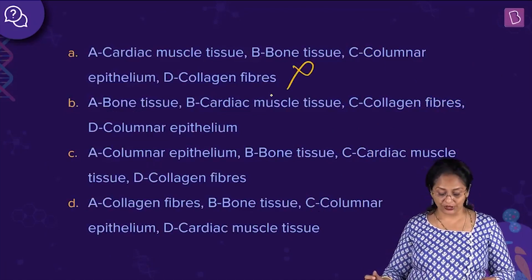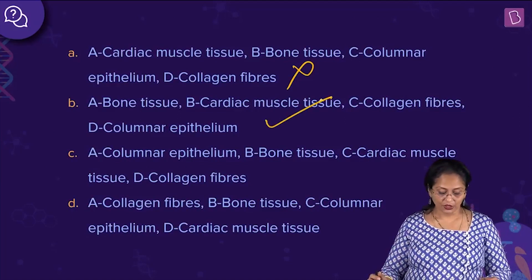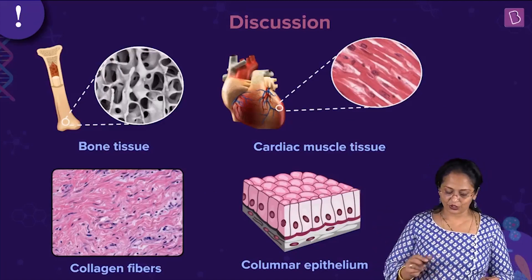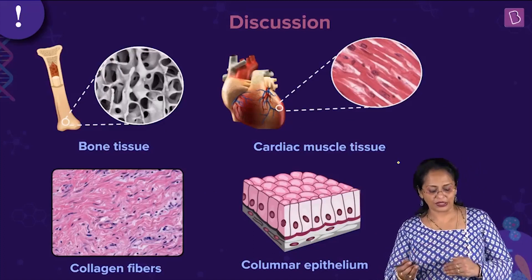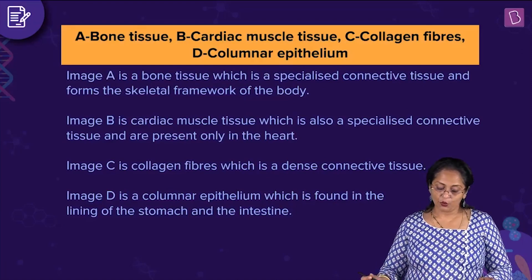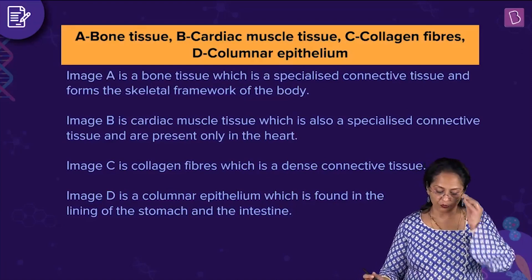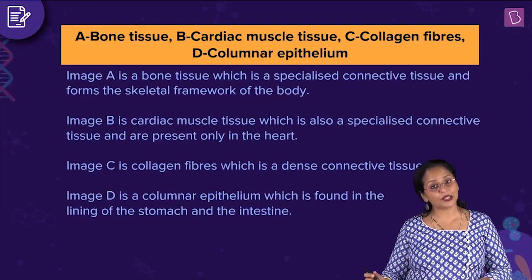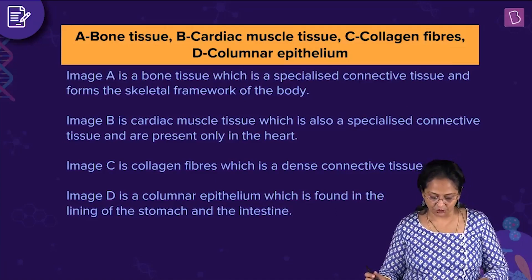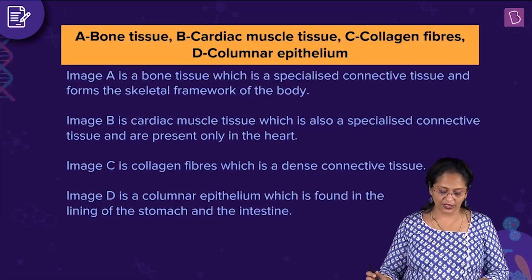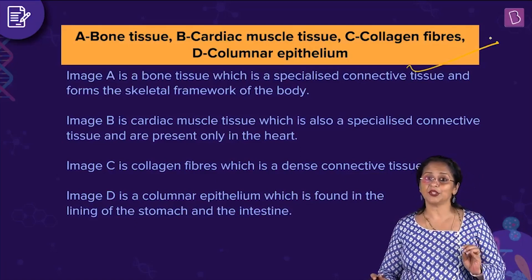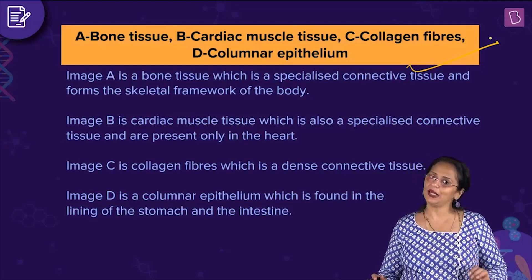Option B — bone tissue, cardiac muscle tissue, collagen fibers, and columnar epithelium — yes, this is correct. Option B is the right answer. Image A is bone tissue, a specialized connective tissue forming the skeletal framework. Image B is cardiac muscle tissue, also a specialized connective tissue present only in the heart. Image C is collagen fibers, a dense connective tissue. Image D is columnar epithelium, found lining the stomach and intestine. So the right answer is B: A=bone tissue, B=cardiac muscle tissue, C=collagen fibers, D=columnar epithelium.